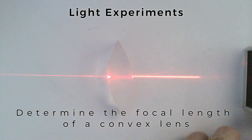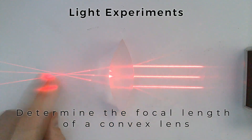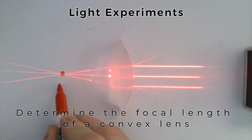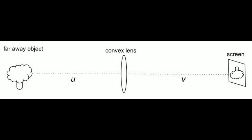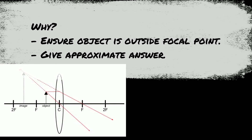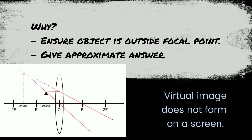We're going to take a look at an experiment to determine the focal length of a convex lens — that's a converging lens. The first thing we want to do is get an approximation for the focal length, and we're going to do that by focusing on a faraway object, as shown in the diagram. We do this because we want to ensure the object is outside the focal point. If it's inside the focal point, it'll produce a virtual image which won't form on a screen. Secondly, it's really good to have an idea of what the answer should be before you begin the experiment.